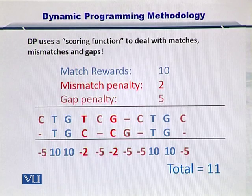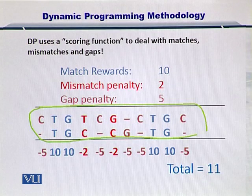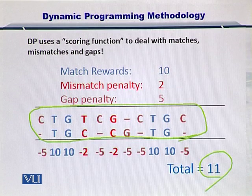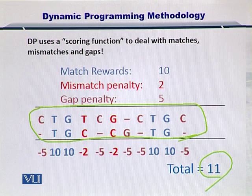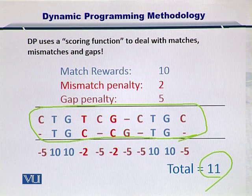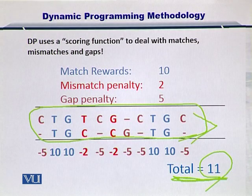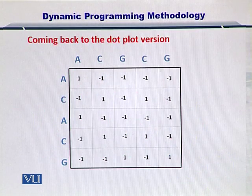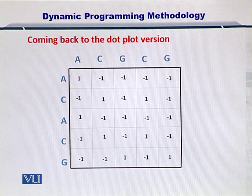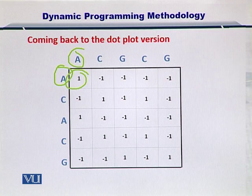Such an alignment between these two sequences has a score of 11. Of course, if you vary this alignment the score will be different. In pairwise sequence alignment you need to create all possible combinations of such alignments, score them, and select the alignment with the maximum total score. Coming back to the dot plots, because that is where dynamic programming is going to take its route.